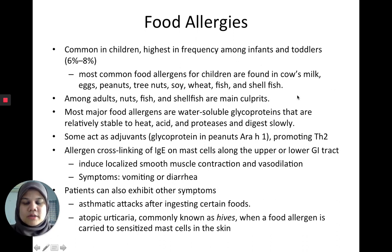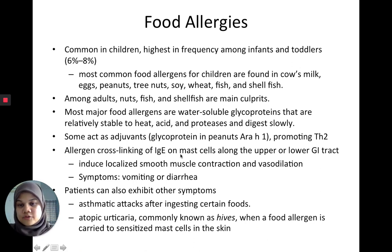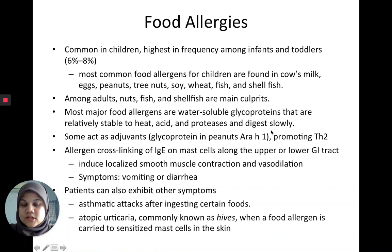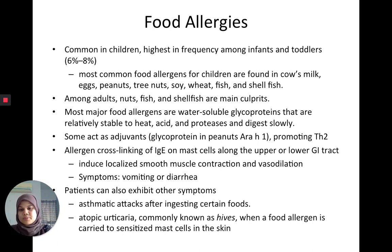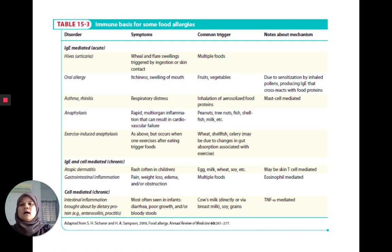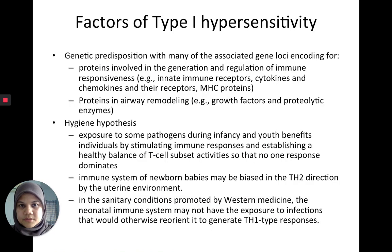For adults, the most common food allergens are nuts, fish, and shellfish. Major food allergens are usually water-soluble glycoproteins stable to heat and acid that digest very slowly, allowing them to act as adjuvants — stimulating the innate immune system, promoting inflammation and the Th2 response. These allergens crosslink IgE on mast cells in the upper GI tract, causing symptoms like vomiting, diarrhea, and pain. Some people also experience asthmatic attacks or develop hives when the food allergen is carried to the mast cells in the skin.